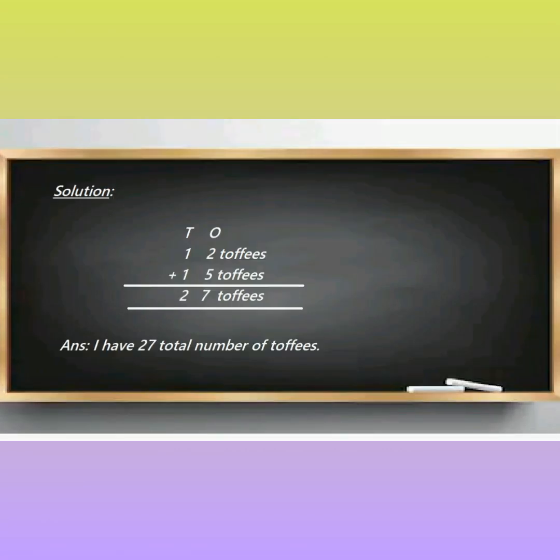Solution. Ones, tens. First, twelve toffees. Then, addition sign. Then, fifteen toffees. Here, we have to do the addition of five and two first. Then, we will add one and one. So, five plus two, how much? Seven. And, one plus one equals two. So, you have twenty-seven toffees with you now. But, you will write down the answer. I have twenty-seven total number of toffees.